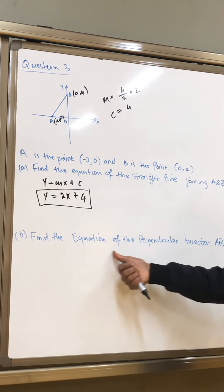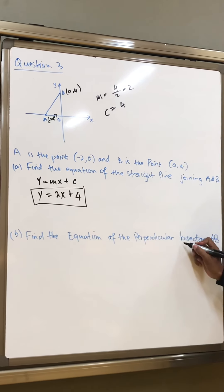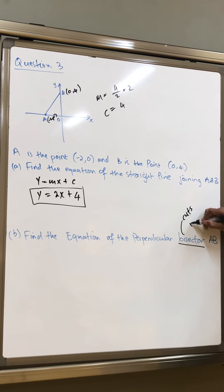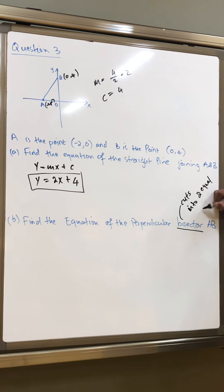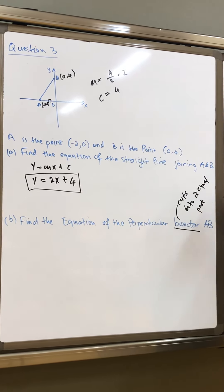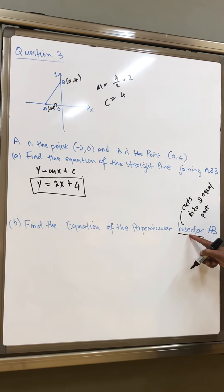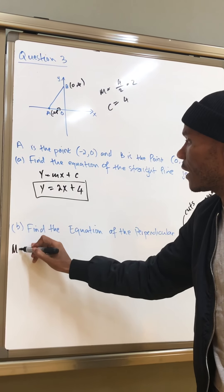It says, find the equation of the perpendicular line. No, not perpendicular line. Perpendicular bisector. So, bisector, it means cuts into two equal parts. That's just two bisectors. So, if I'm going to bisect, I would need the midpoint. So, what would be the midpoint of AB? So, I'll start with that.